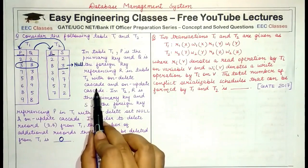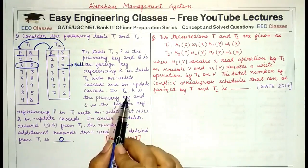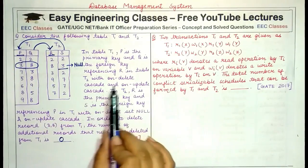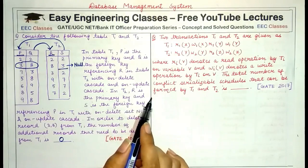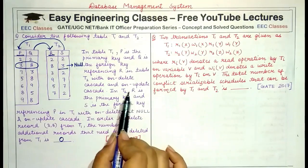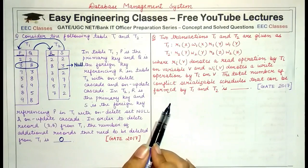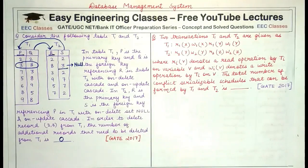In ON DELETE CASCADE, if a value from a primary key is deleted, you must make the corresponding deletion from the foreign key referencing it. In ON DELETE SET NULL, there won't be any further deletion in the foreign key. This question becomes tricky when you don't know the clear difference between ON DELETE CASCADE and SET NULL, so your concepts about these constraints must be very clear.